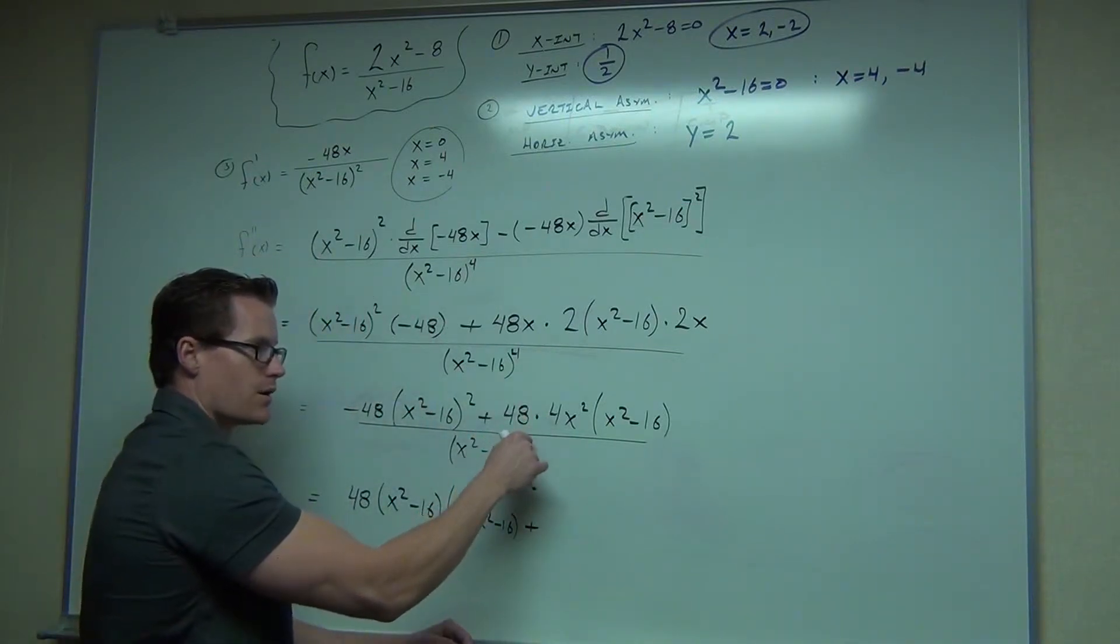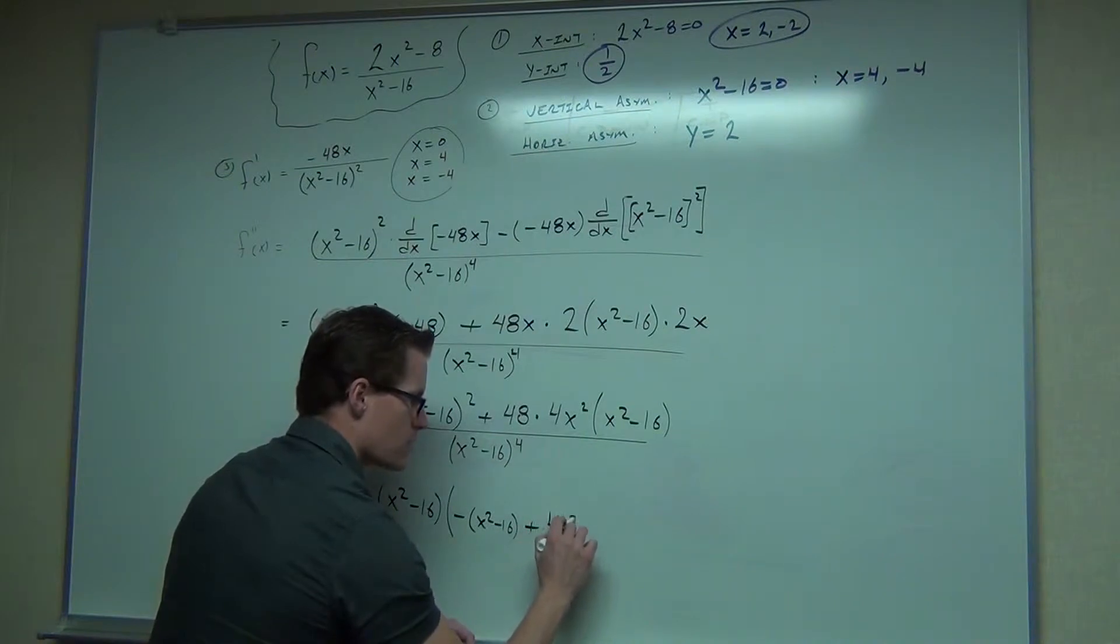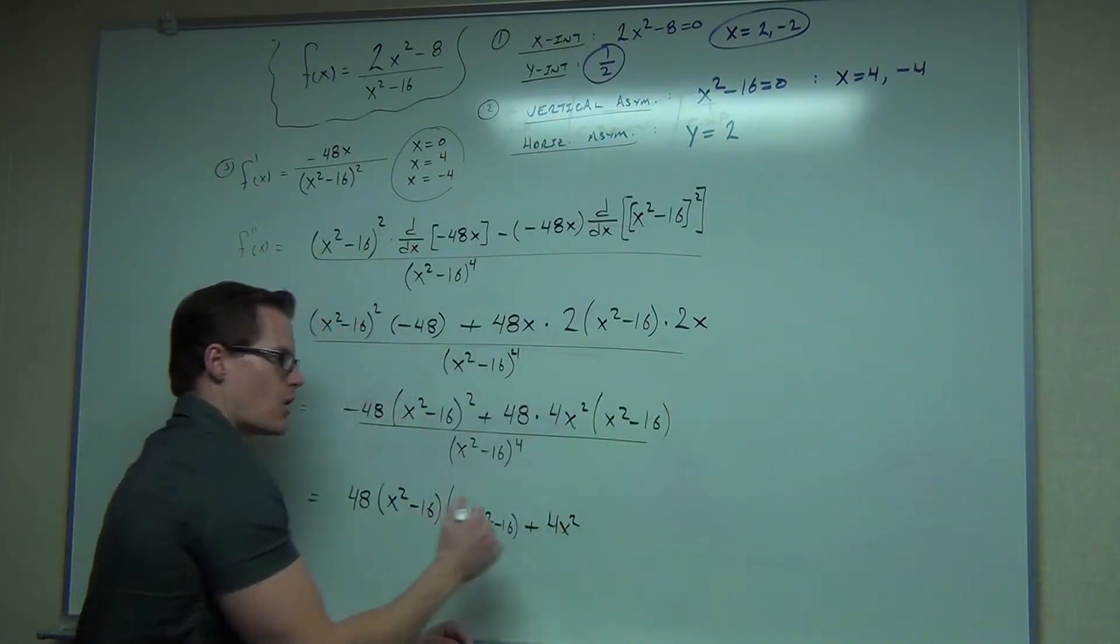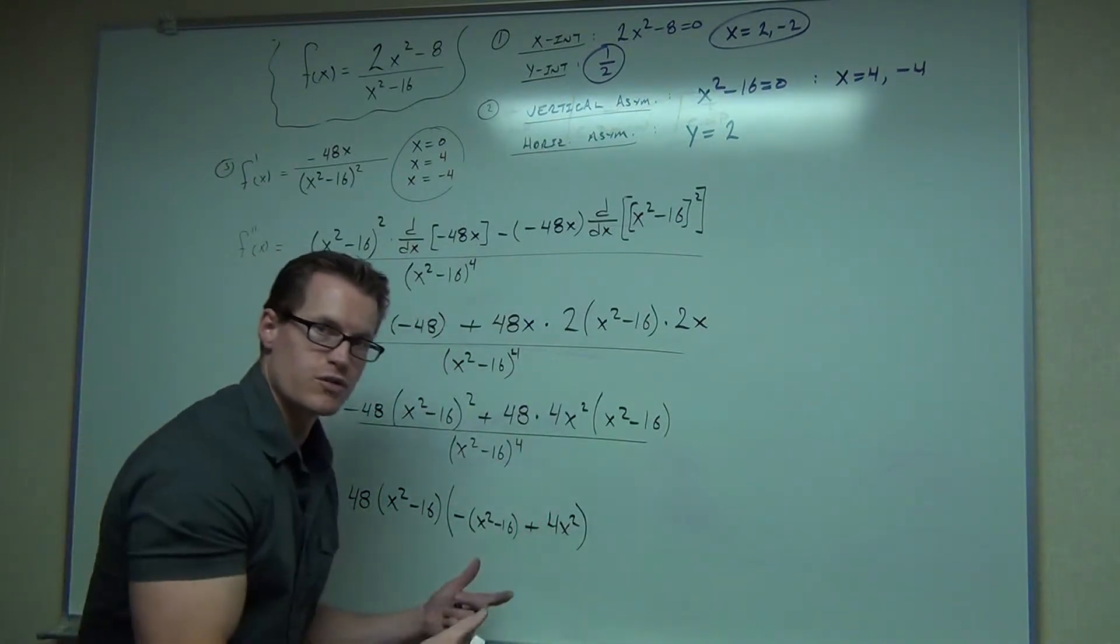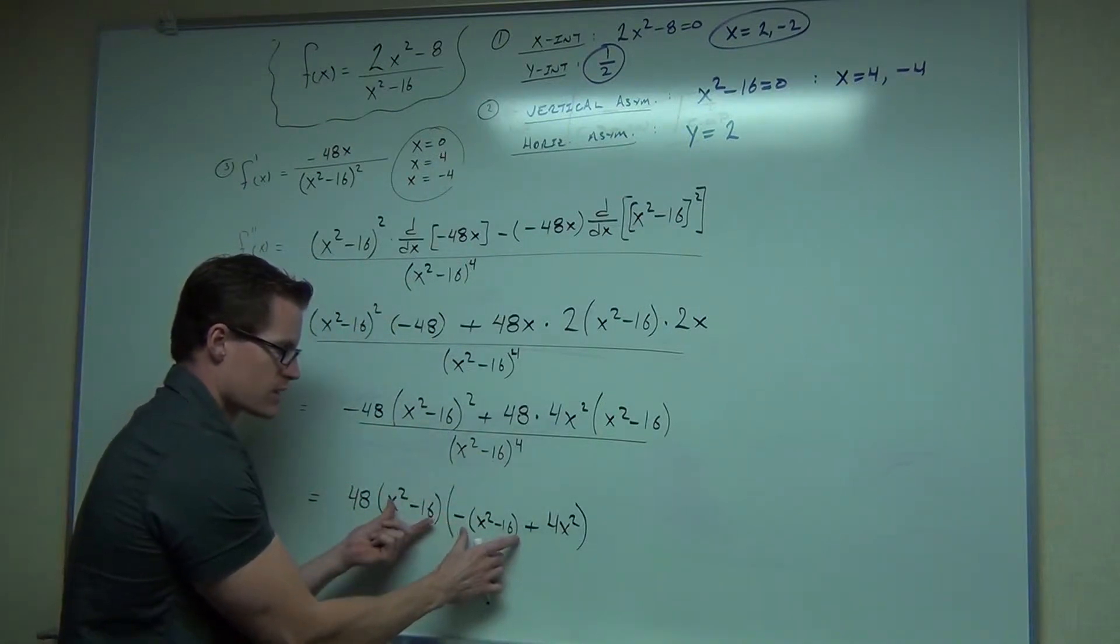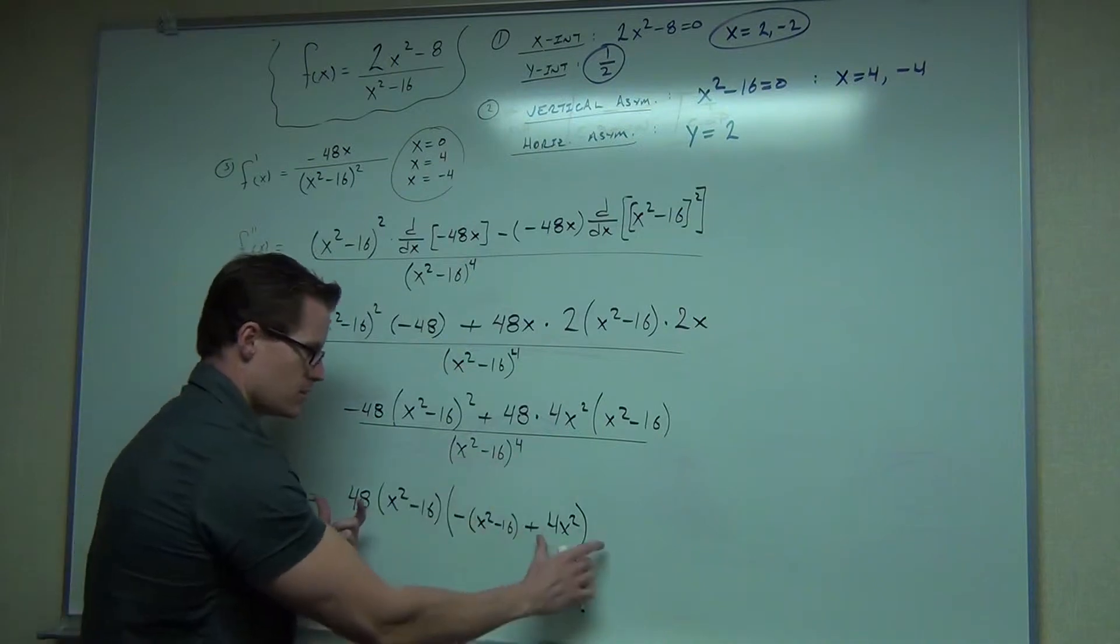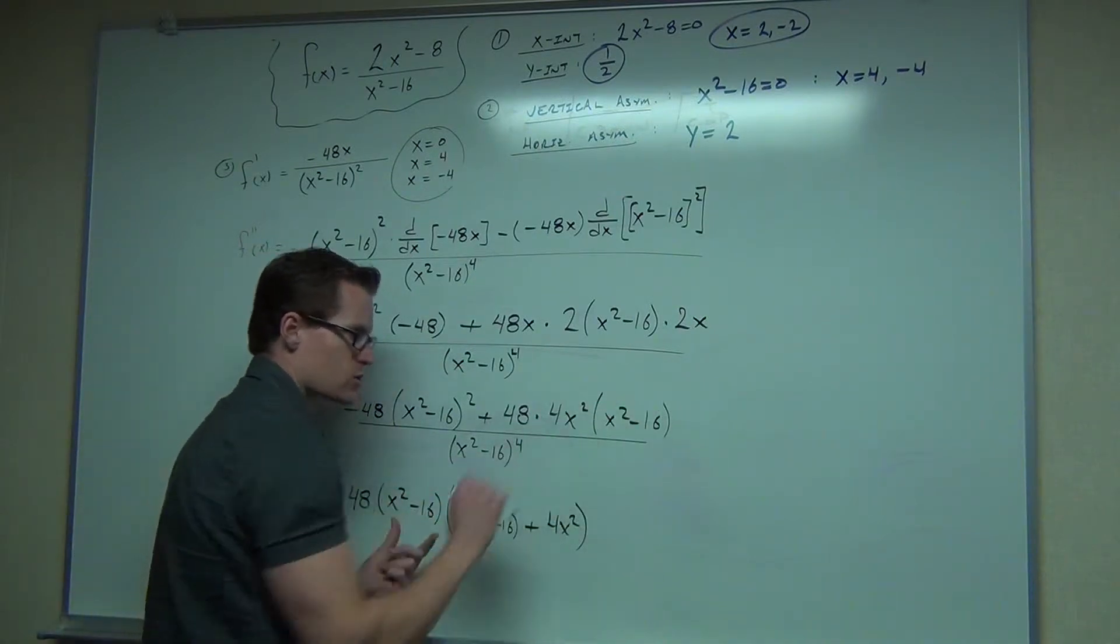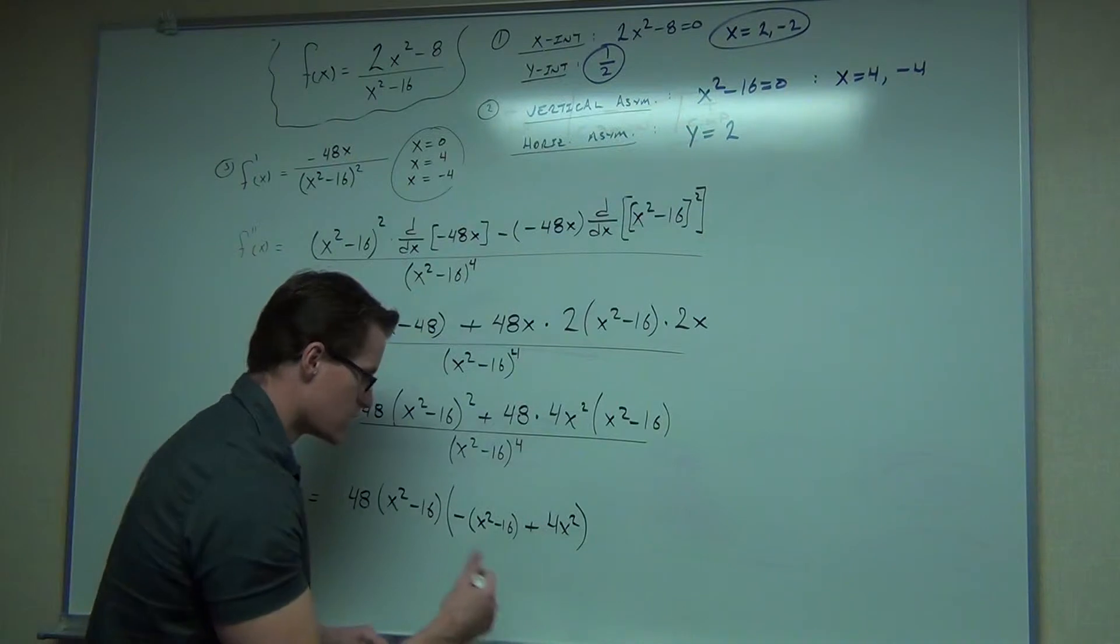Plus, the 48 is gone. We have 4x squared. The x squared minus 16 is gone. Check it with distribution if you really want to. But if you distribute this in, that's negative 48 x squared minus 16 squared plus 48 times 4x squared and then x squared minus 16. So that's the correct factorization.